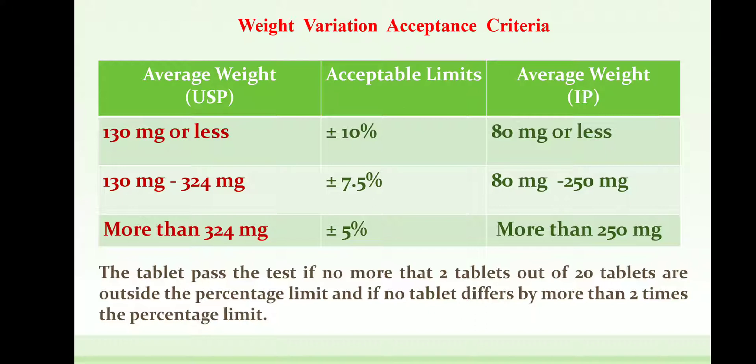In the case of IP, a tablet weight deviation of ±10% is accepted for tablets weighing 80 mg or less. For tablets weighing 80 mg to 250 mg, the accepted deviation is ±7.5%, and if the tablet weight is more than 250 mg, ±5% deviation is accepted as per IP or BP.